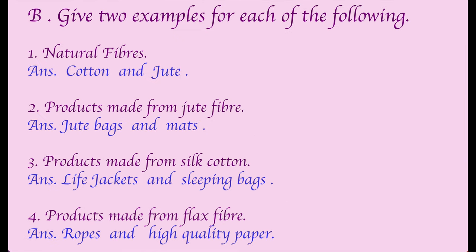Fifth - the process of making yarn from fibers: Spinning. Give two examples for each: Natural fibers - cotton and jute. Products made from jute fiber - jute bag and mat. Products made from silk cotton - life jackets and sleeping bags. Products made from flax fiber - ropes and high quality paper.